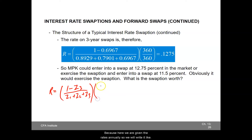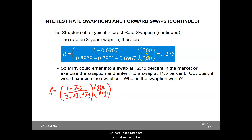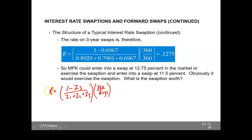Because the rates here are annual, we write it as 360 divided by days. These rates are annualized. So if the swap involves quarterly payments it will be 90 days; if the swap involves semi-annual payments it will be 180 days. This is the formula used to estimate the swap fixed rate.